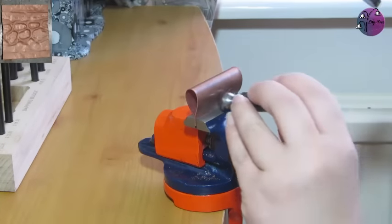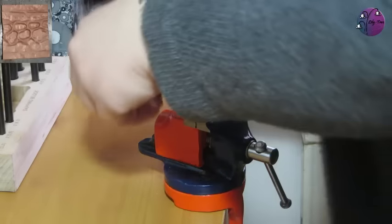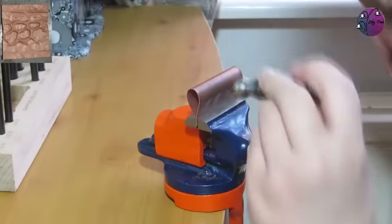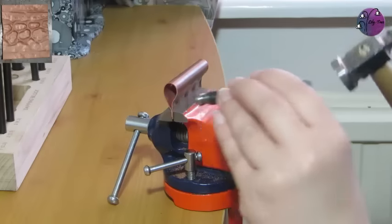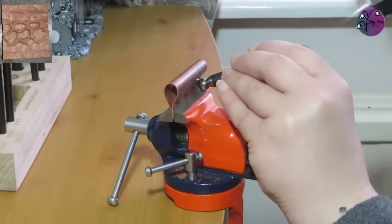And once I've gone in with a large dapping punch I can then reduce that punch down a bit and go in on the same dents. And I can just keep reducing the punches until I'm happy that those dents will hold the copper quite well.